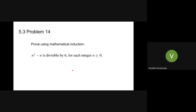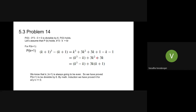The second problem is number 14 from section 5.3. We need to prove that n cubed minus n is divisible by 6 for each integer n greater than or equal to 0. The initial step: when n equals 0, 0 cubed minus 0 equals 0, which is divisible by 6, so P(0) holds. For the inductive step, we assume that for some k greater than 0, P(k) holds — that is, k cubed minus k equals 6r for some integer r. We then need to prove P(k+1): that (k+1) cubed minus (k+1) is also divisible by 6.